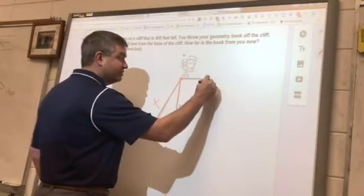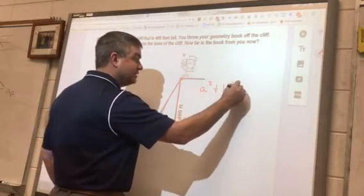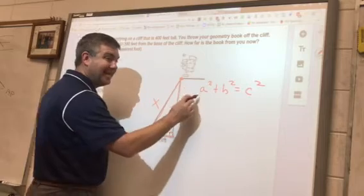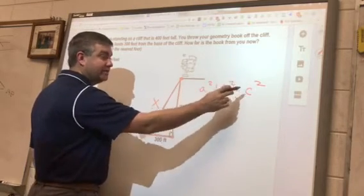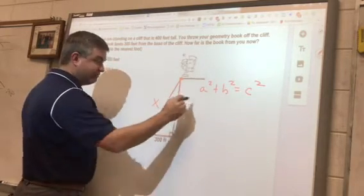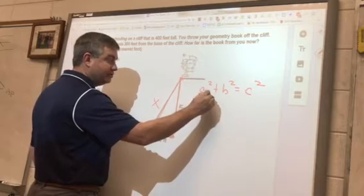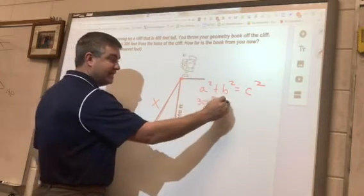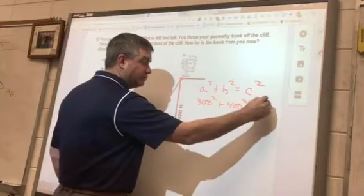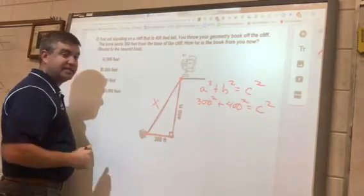Okay, so the Pythagorean theorem is a squared plus b squared is equal to c squared. Leg squared plus leg squared equals hypotenuse squared. So the first leg goes here, 300 squared plus the second leg goes here, 400 squared equals c squared. This is just c.